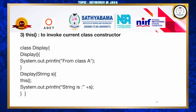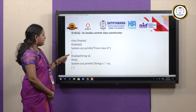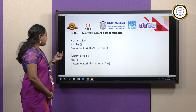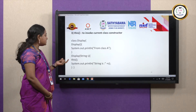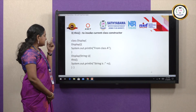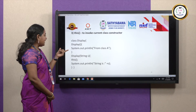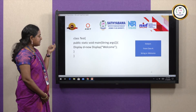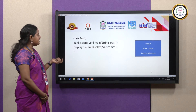Third use — 'this' to invoke the current class constructor. In class Display, the default constructor prints 'from class A'. A second constructor with a String parameter calls the default constructor using 'this()' and then prints the string. In the test class, creating 'Display d = new Display("welcome")' produces output 'from class A' and then 'string is welcome'.